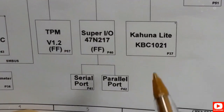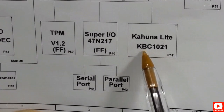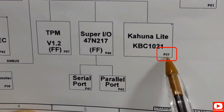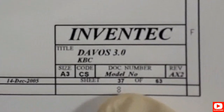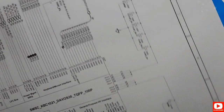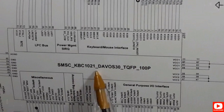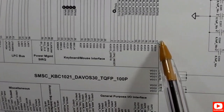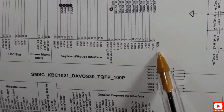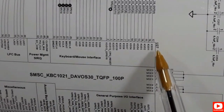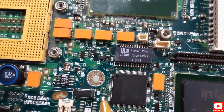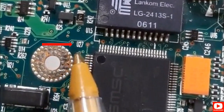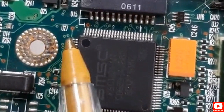The keyboard controller 1021 exists on page 37 (P37). If we go to page 37, we'll find this IC. Here we are on page 27 — the reference shows keyboard control 1021. We have U27, which is the reference designator for this IC. If we go to the motherboard, we should find U27 next to the keyboard controller — and exactly the same reference designator is confirmed on the motherboard.